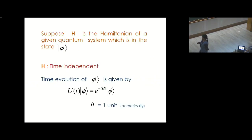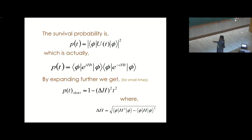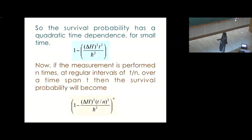Suppose we have Hamiltonian H of a given quantum system which is in the state phi. And H is time independent, and the time evolution of phi is given by the unitary operator acting on phi. Here I have taken H cross as one unit numerically, so the survival probability for this kind of system is the square of the expectation value of unitary operator, which is the product of these two terms. By expanding further, we get the survival probability as 1 minus delta H square T square. Interestingly, the survival probability has a quadratic time dependence for small time.